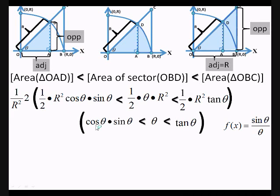Representation of what we did. What we're left with is cosine theta times sine theta is less than theta, which is less than tangent theta.